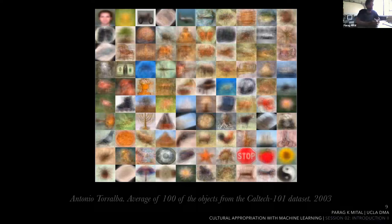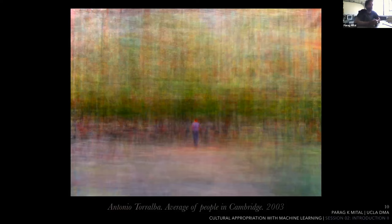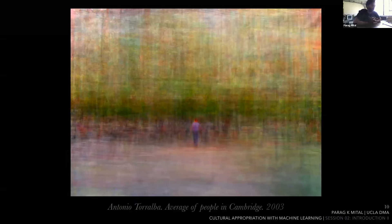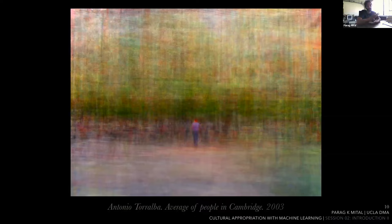Here in 2003, Torralba also worked on image averaging of scenes rather than objects. He was working on scene perception — the overall image scene, not just a particular object. He took a collection of street scenes and it reveals an interesting bias: generally there's a pedestrian focused in the middle of the image across the collection. You can also make out the landscape and color of the street versus the sky and trees along the street.